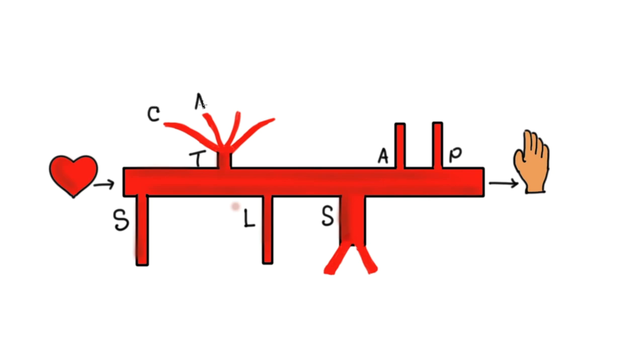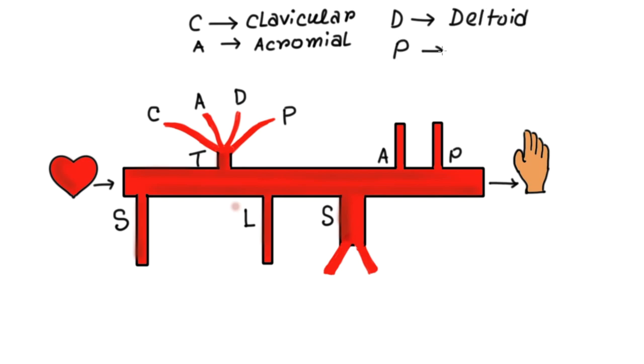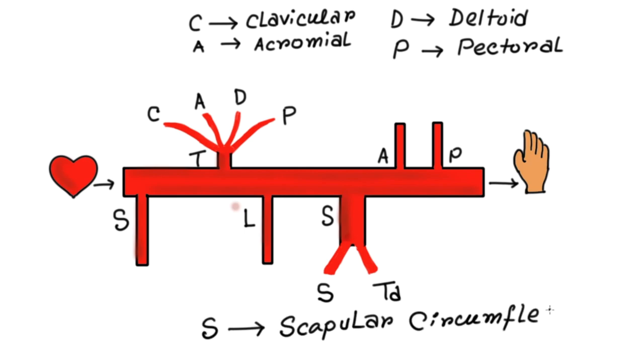Now this thoracoacromial artery again gives four branches such as clavicular artery, acromial artery, deltoid artery, and pectoral artery. Subscapular artery also gives two branches: scapular circumflex and thoracodorsal artery.